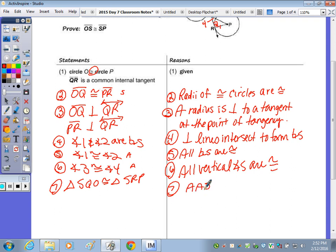And then, why would the sides OS and SP be congruent to finish? Some of you are close. Some of you had it. CPCTC. Corresponding parts of congruent triangles are congruent.